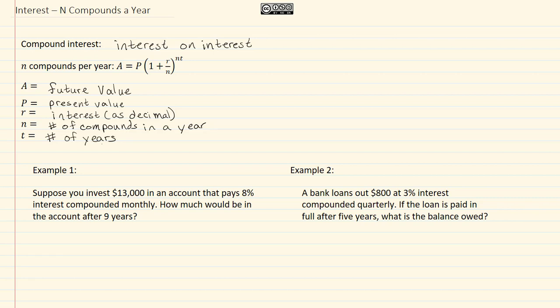When we talk about compounds in a year, if we talk about weekly, you're looking at 52. Monthly is 12, semi-annual is going to be two, and quarterly will be four.